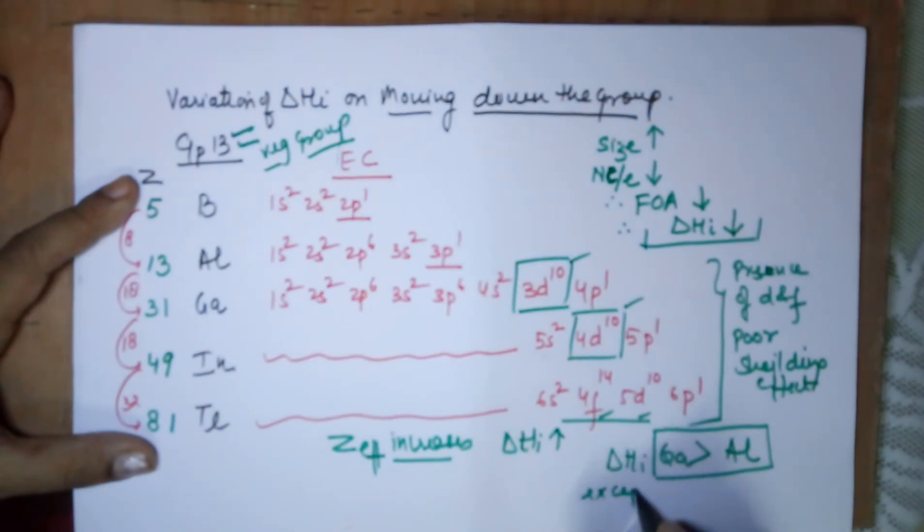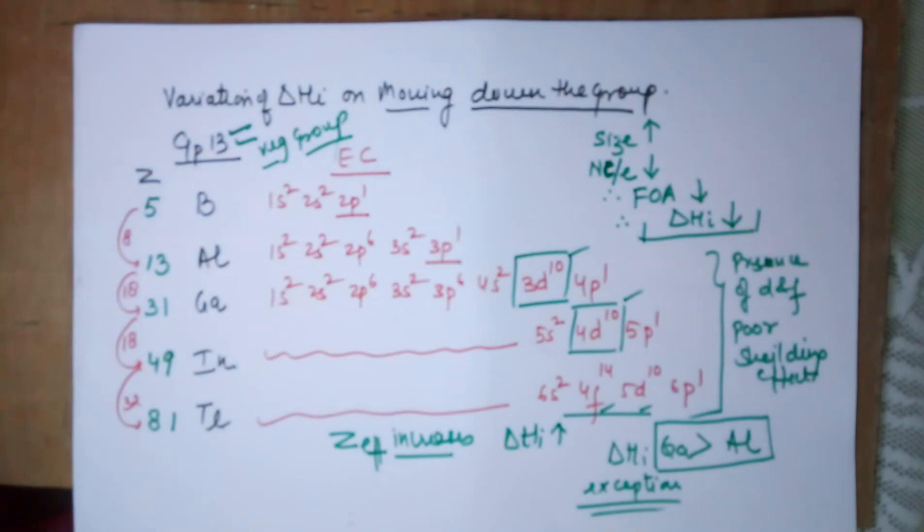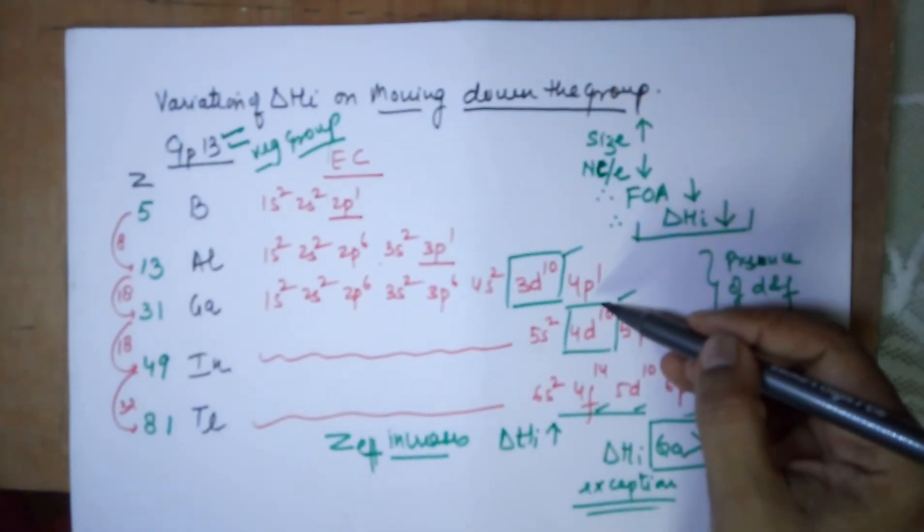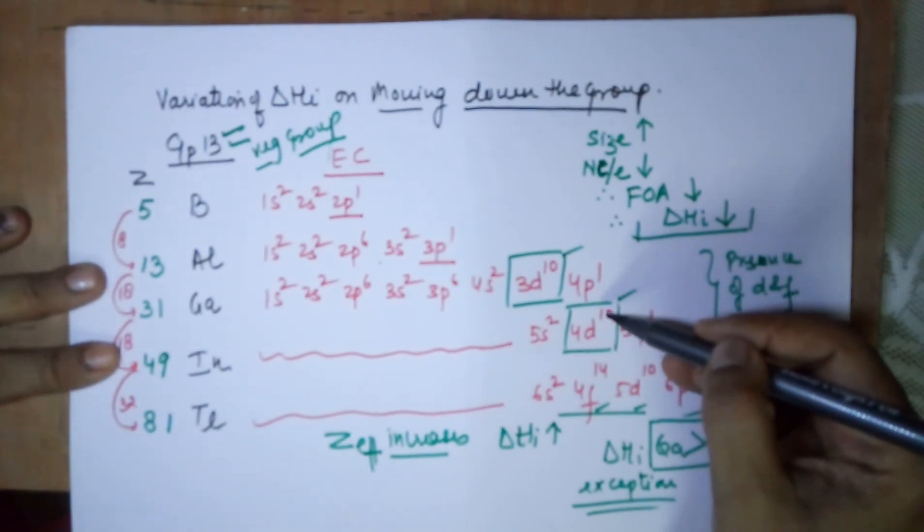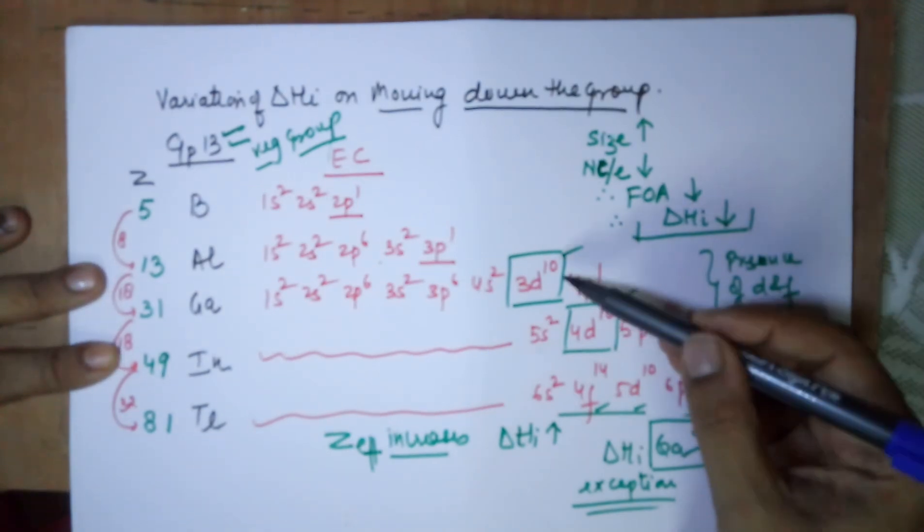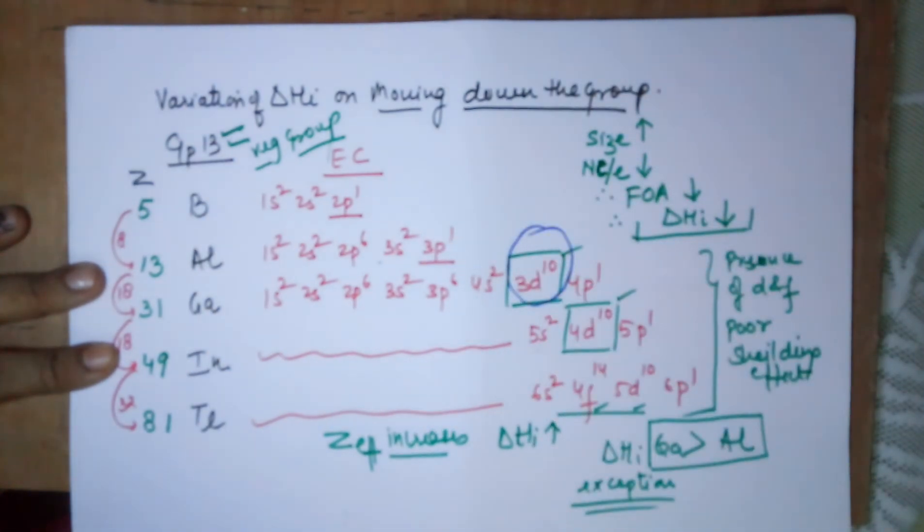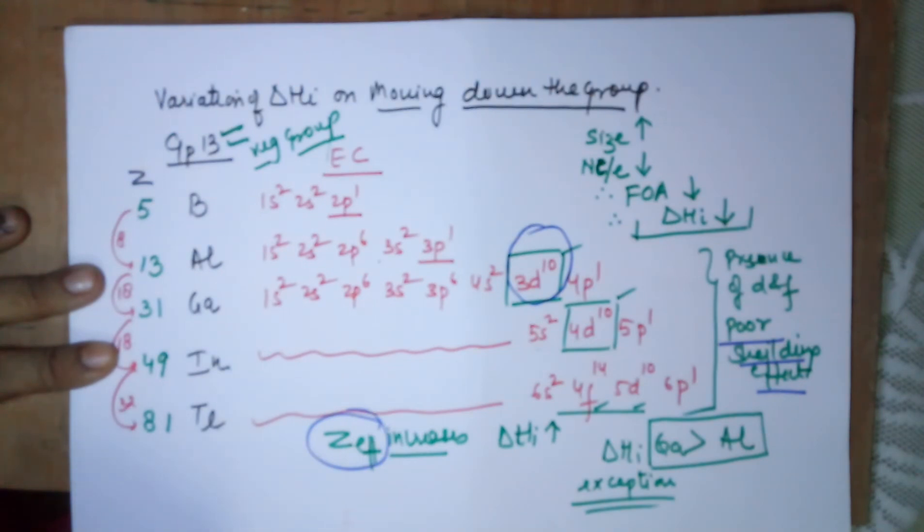This is a commonly asked exception. Down the group the ionization energy should decrease. Hence we expected that gallium, being below aluminum, should have a lower ionization energy. But what is found is contrary. The ionization energy of gallium is found to be higher than that of aluminum, and everything is due to these 10 electrons in the d-subshell which have got a poor shielding effect. So it leads to an effective nuclear charge increase.